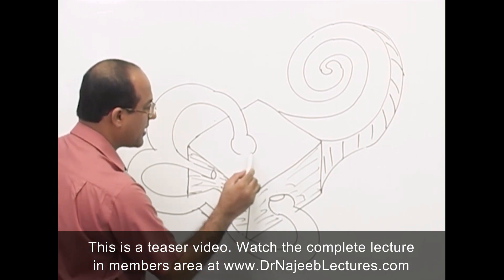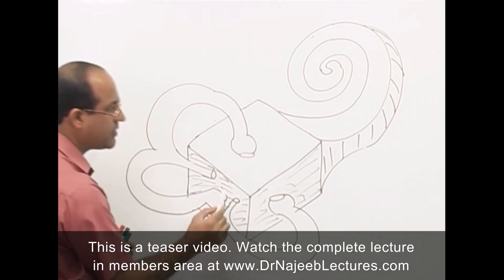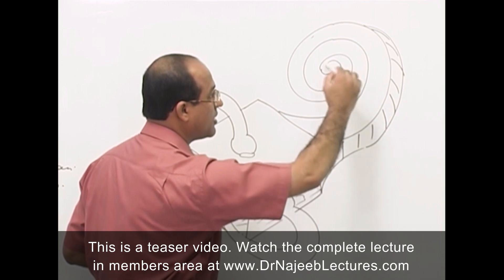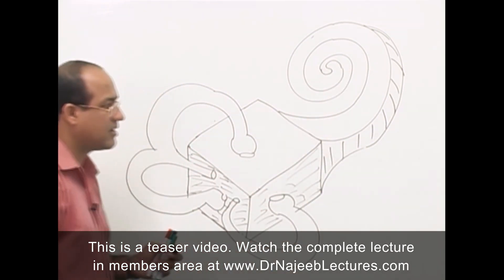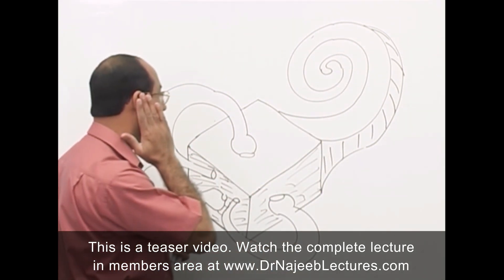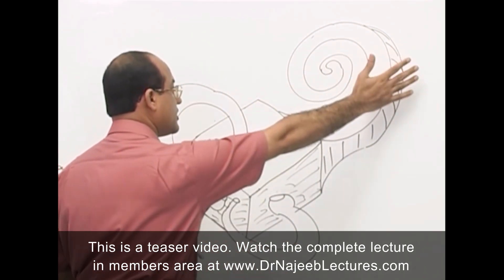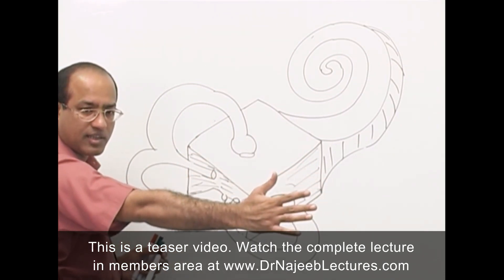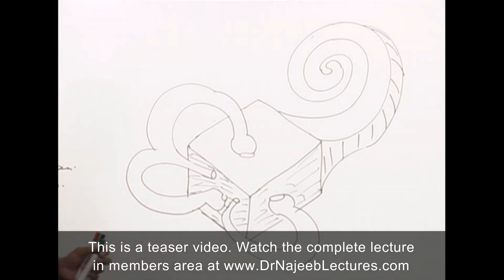This is the right ear — anterior side, posterior side, lateral side, and medial side. The basic principle in understanding this whole structure is to imagine a bony system with a membranous cavity housed inside it.